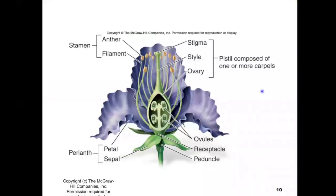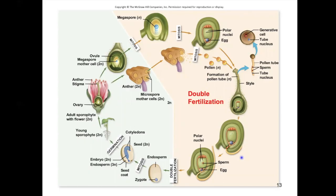We'll start off by reminding ourselves of the different parts of the angiosperm flower — the outer parts, the perianth composed of the sepals and petals, then the male parts, the stamens with the anther and filament, and the female parts in the pistil with the stigma, style, and ovary. What's really important for double fertilization is events that take place in the ovary in structures called ovules, where we find our female gametophyte. The angiosperm life cycle features this unique process called double fertilization, where the male gametophyte makes two different sperm that each fertilize a different part of the female gametophyte to produce an embryo and the tissue endosperm.